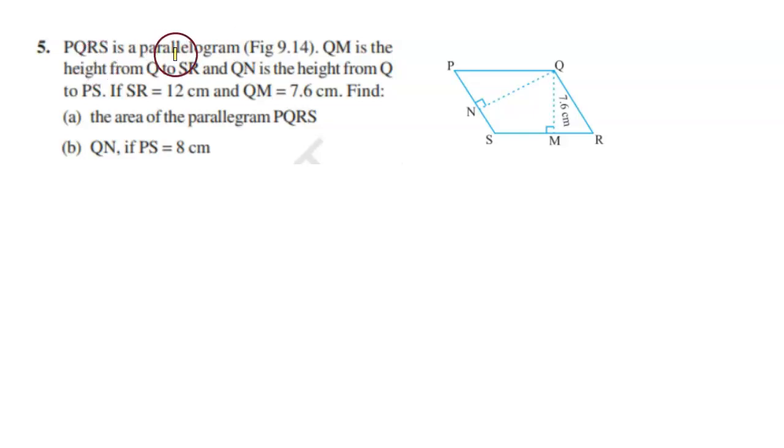Today's question is: PQRS is a parallelogram. QM is the height from Q to SR and QN is the height from Q to PS.